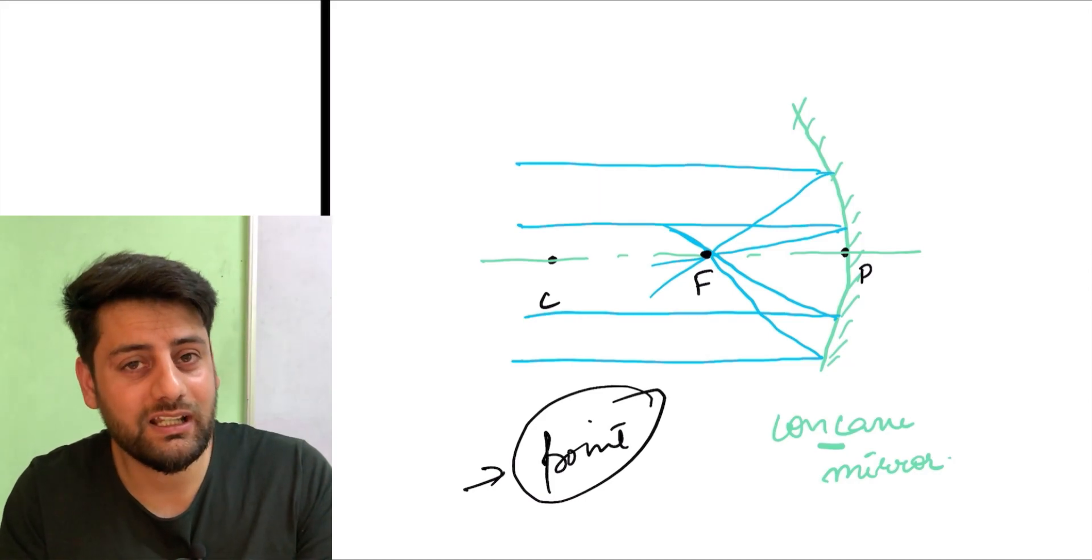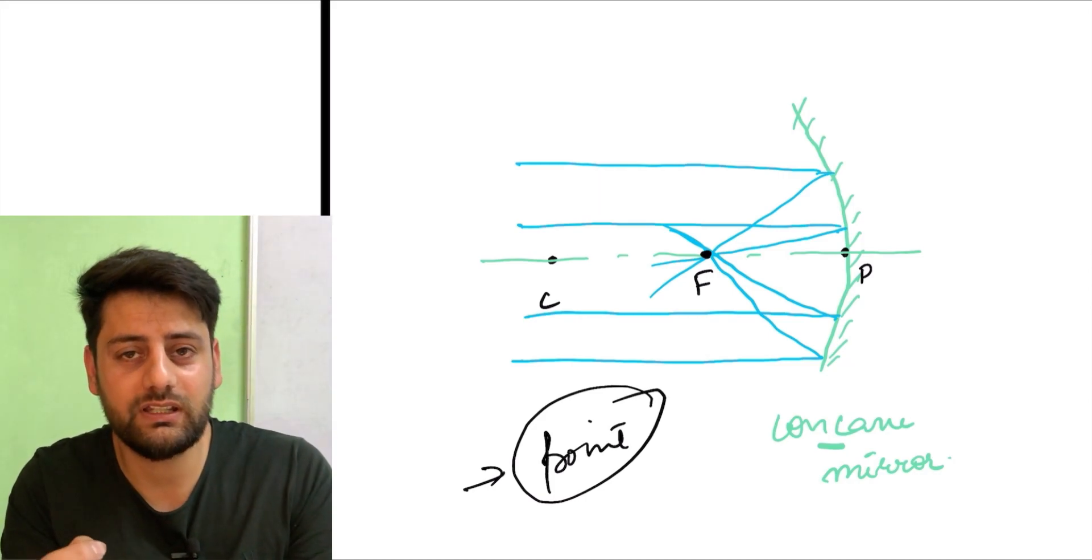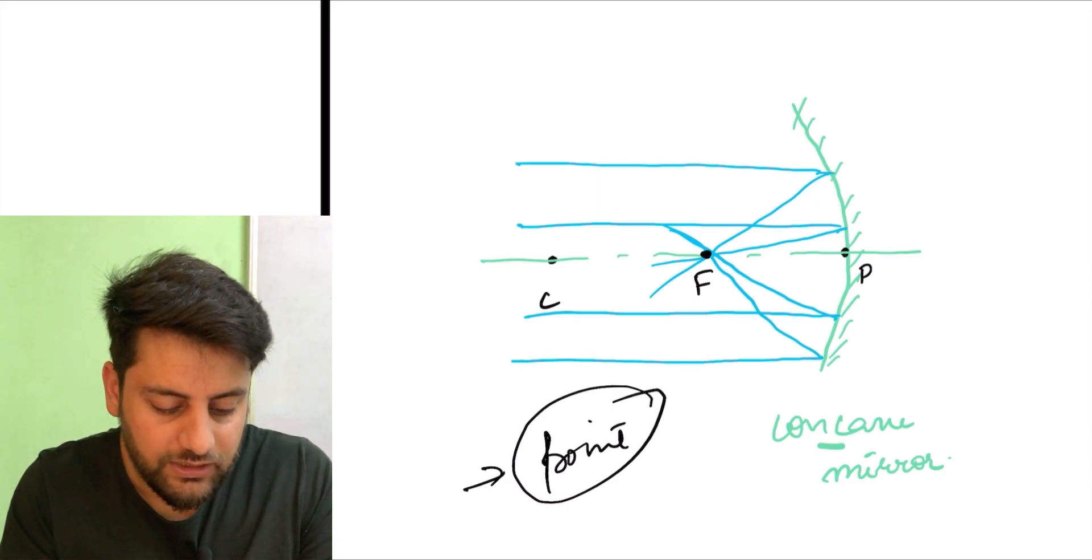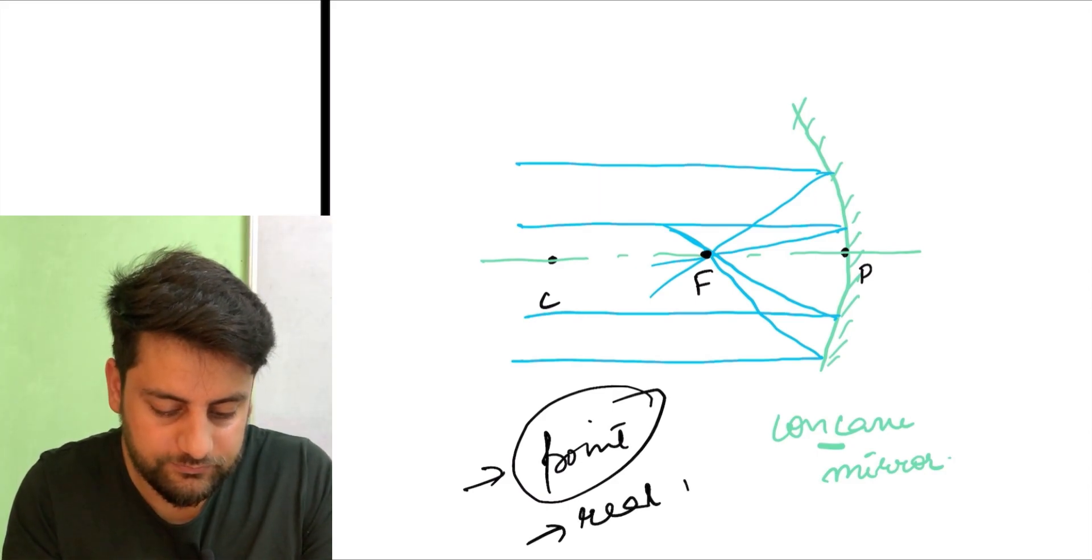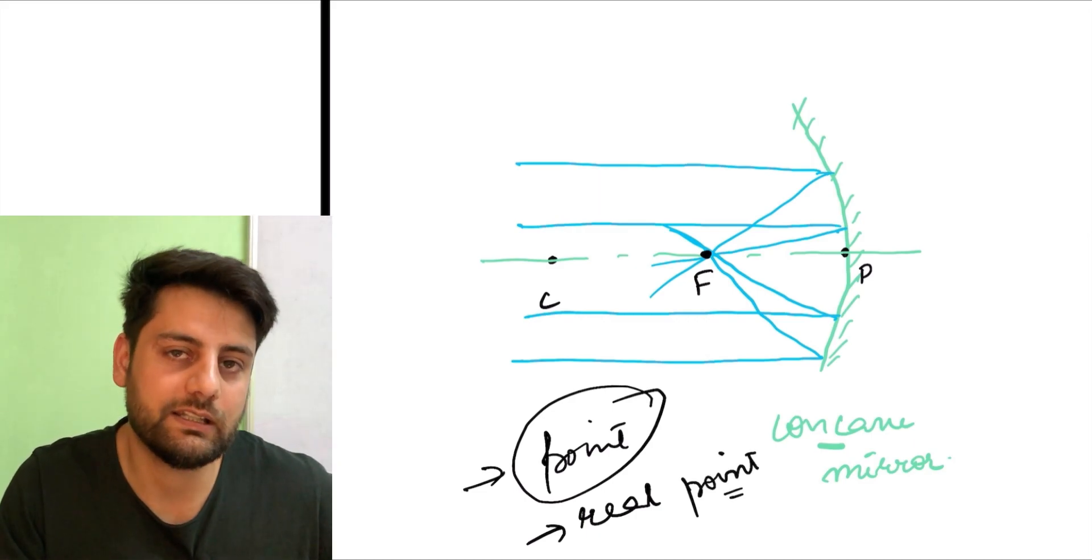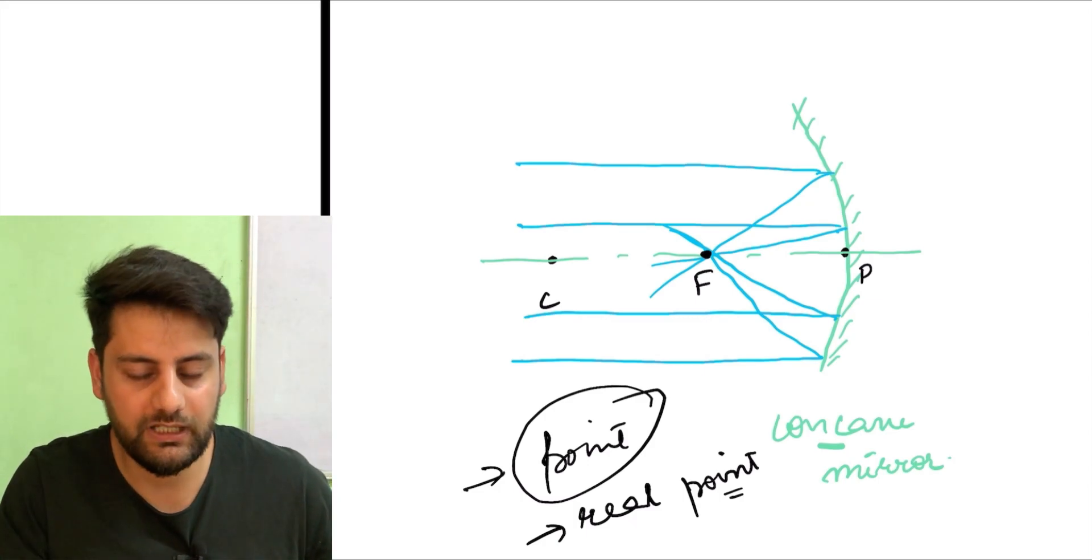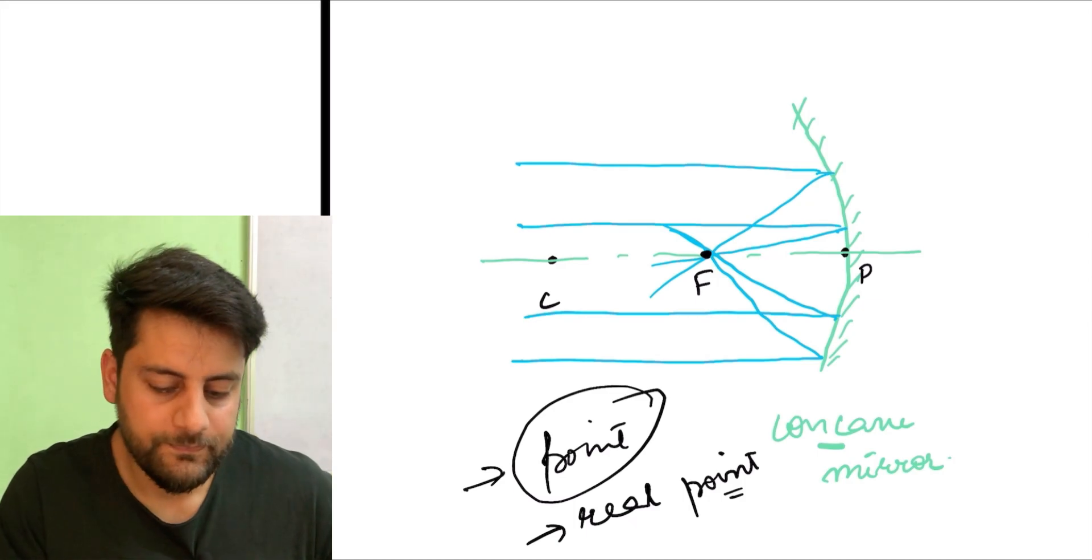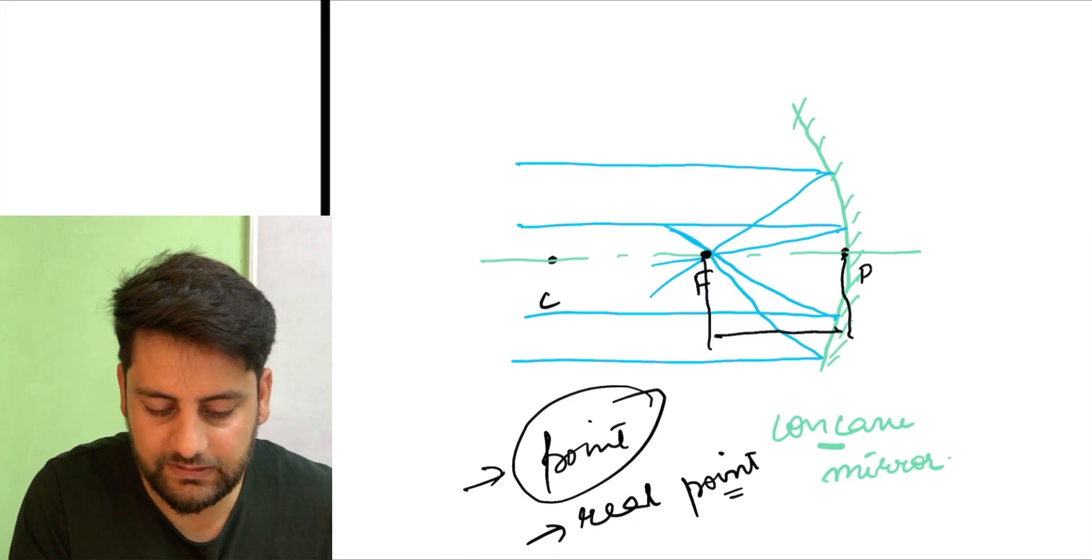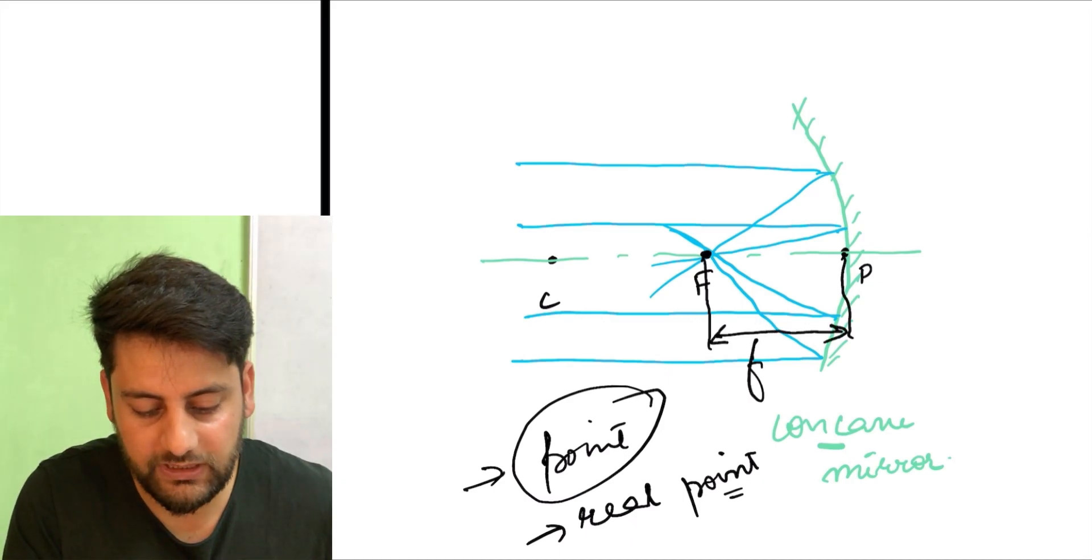Now as this point, since ye point joh hai jis pe actually rays meet kar rahi hai, actual rays, rays are actually diverging or reflecting from the mirror aur wo yahan pe meet kar rahi hai. So that's why we call it as a real point. Ye ek real point hai. You would need a screen to see it. Aap aise is ko dekh nahi paayenge. So this is actually a real point. And the length from this point to the pole, the distance which we are talking about now, is distance ko hum kehta hai focal length.